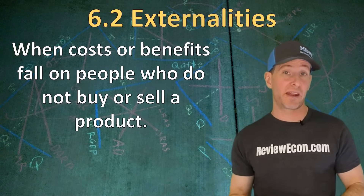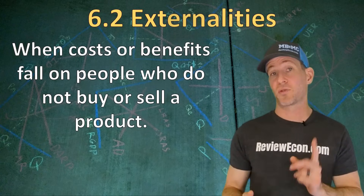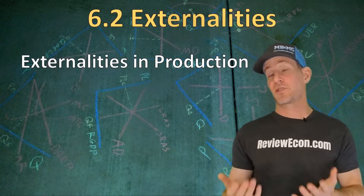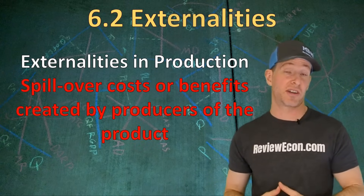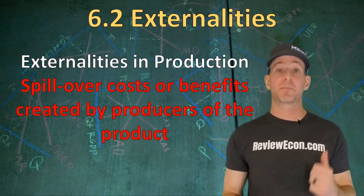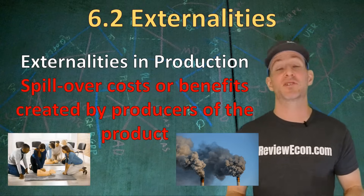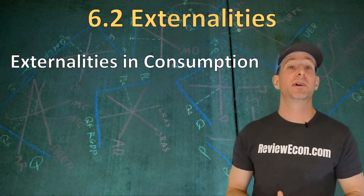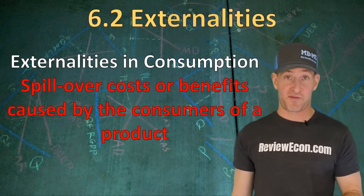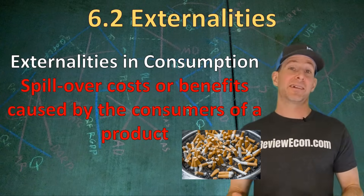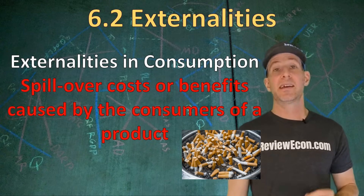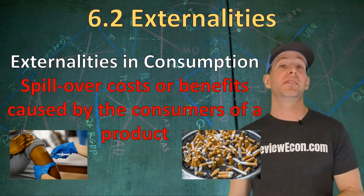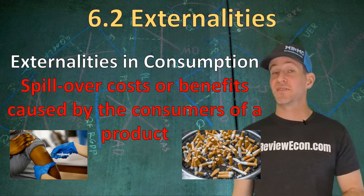Next, we have externalities. An externality is when there are benefits or costs that fall on people who aren't the producers or consumers of a product. Externalities can come from the production or the consumption of a particular good. A negative externality in production is something like pollution at a factory. A positive externality in production could be safety training programs that lead to greater safety for the rest of society. A negative externality in consumption is the consumption of cigarettes, which leads to secondhand smoke and unsightly cigarette butts. Positive externalities in consumption come from vaccines — through herd immunity, vaccines can give some protection to people who don't get the vaccine.